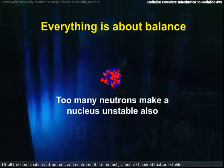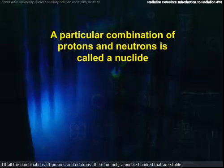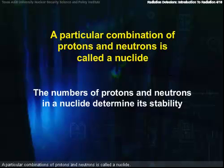Of all the combinations of protons and neutrons, there are only a couple hundred that are stable. A particular combination of protons and neutrons is called a nuclide. Let's look at the stable nuclides and some of the unstable ones also.